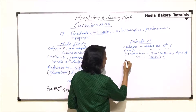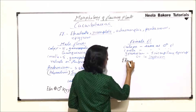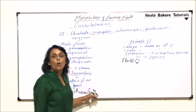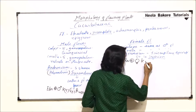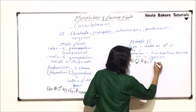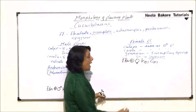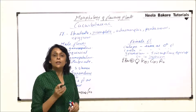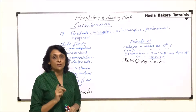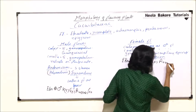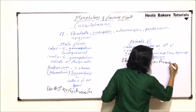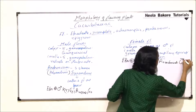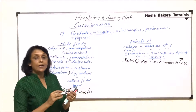For the female flower, the first part remains the same: ebracteate, actinomorphic, and the flower is pistillate — only the female reproductive whorl. Calyx: 5 gamosepalous; corolla: 5 gamopetalous. Androecium is absent, or sometimes highly reduced in the form of rudimentary structures called staminodes. Gynoecium is tricarpellary, syncarpous, and the ovary is inferior, so we put the line above G.